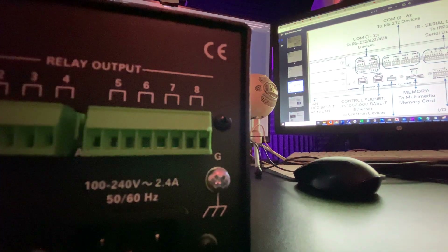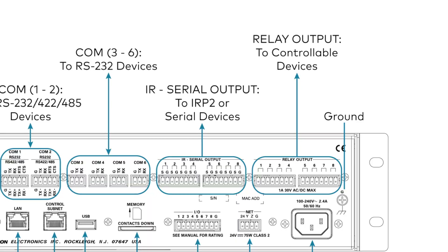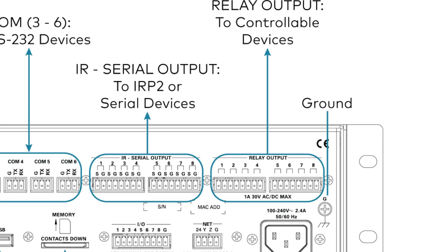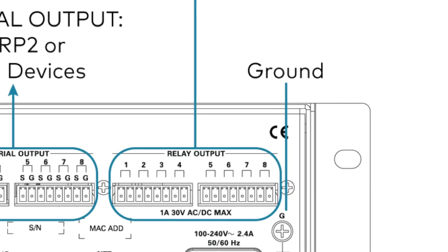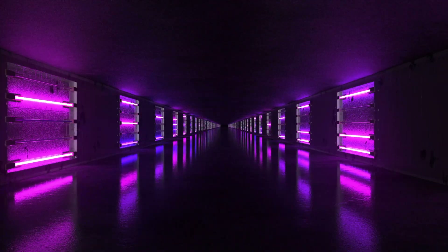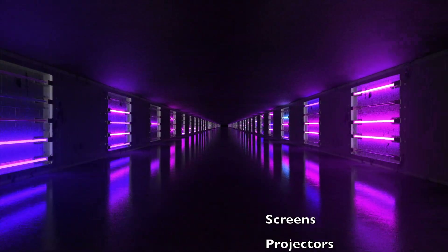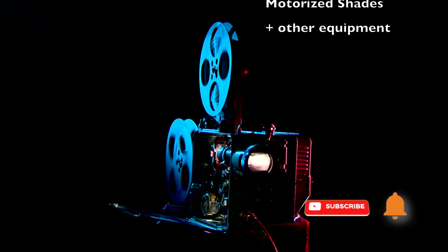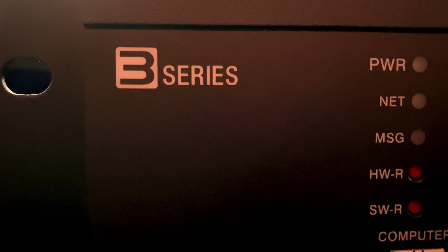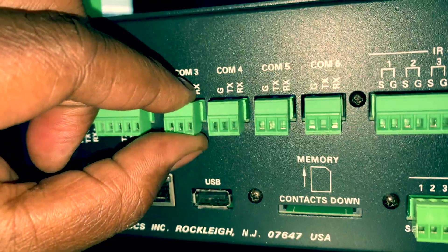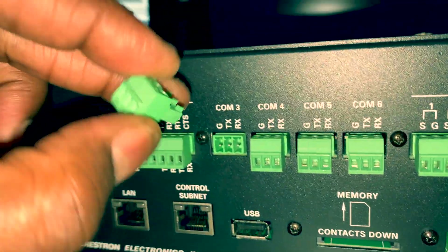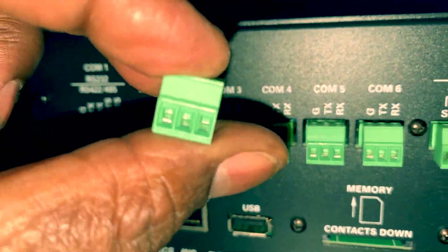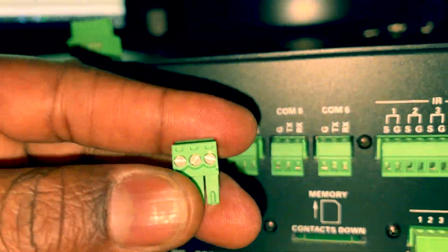The relay ports on the AV3 provide hardware-level control capabilities. Each relay port is a digital output that can be used to interface with external devices such as screens, projectors, lighting systems, motorized shades, and other equipment. The AV3 processor offers both 3-pin and 5-pin COM ports, catering to a variety of serial device requirements.